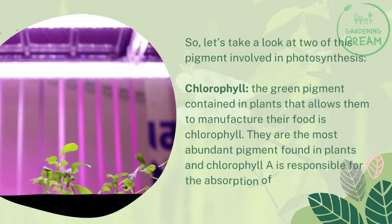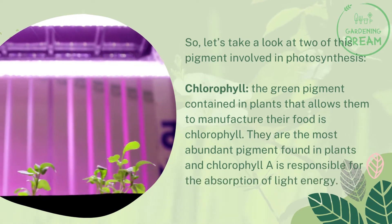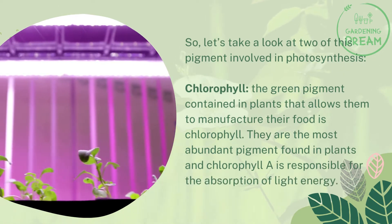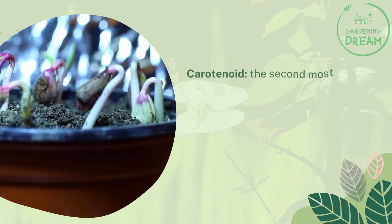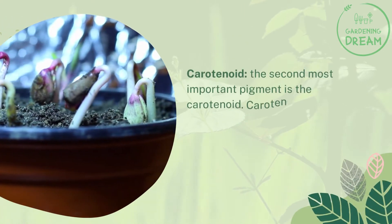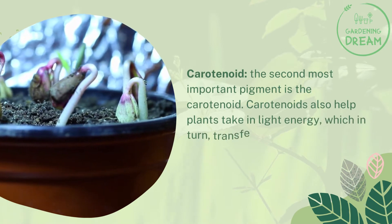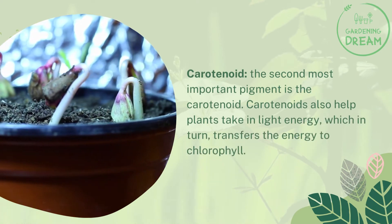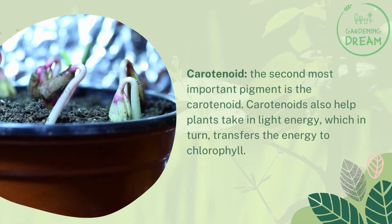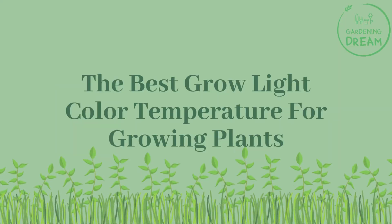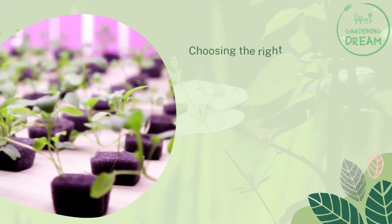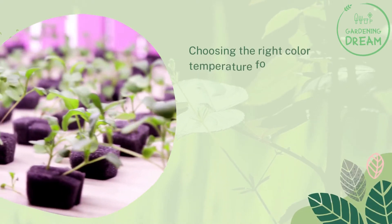Chlorophyll: the green pigment contained in plants that allows them to manufacture their food is chlorophyll. It is the most abundant pigment found in plants, and chlorophyll A is responsible for the absorption of light energy. Carotenoid: the second most important pigment is the carotenoid. Carotenoids also help plants take in light energy, which in turn transfers the energy to chlorophyll.